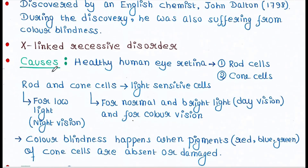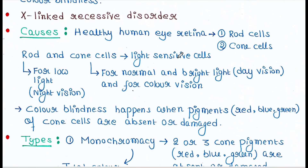Let's talk about some causes of colorblindness. Our healthy human eye retina contains two types of cells: rod cells and cone cells. These cells are light-sensitive. Rod cells are responsible for low-light vision, which is called night vision. Cone cells are required for normal and bright-light vision, called day vision, as well as for color vision.